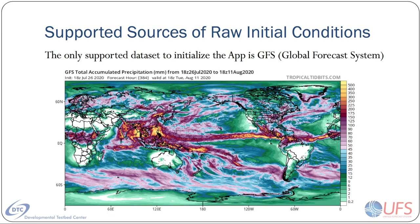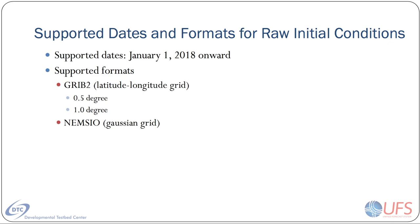The UFS medium-range weather app currently only supports the use of raw initial conditions from the Global Forecast System, or GFS. In other words, CFS, ERA5, ECMWF, etc. are not supported. Additionally, only dates since January 1, 2018 are supported. Older dates may work, but are not guaranteed.